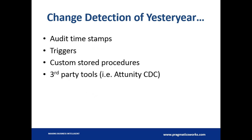Inside the world of data warehousing, we have a couple of different types of dimensions. Type 0 is an attribute that does not change. Type 1 is an attribute that changes, but we don't care to keep the history on it — something like a phone number, if we don't care about that history. And Type 2 are attributes inside our dimensions that change and where we do care to keep the history.